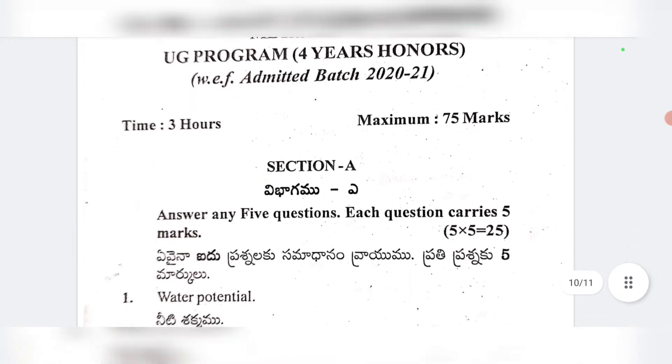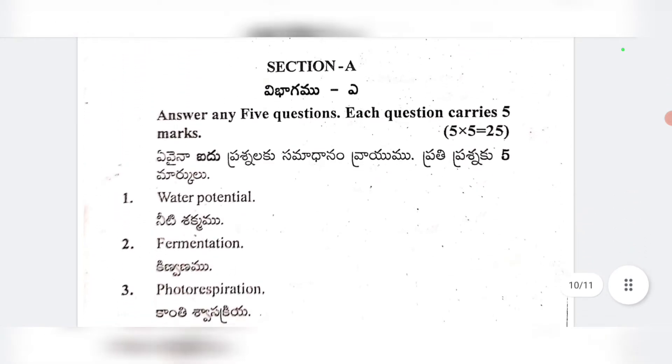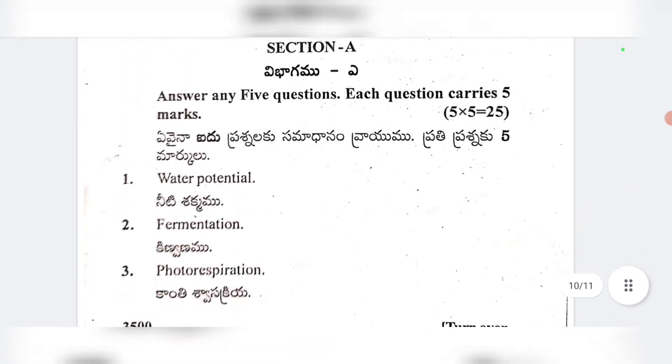The short questions are: water potential, fermentation, photorespiration. Then glyoxylate cycle, cytokinins, imbibition, photosynthetic pigmentation, and classification of lipids.